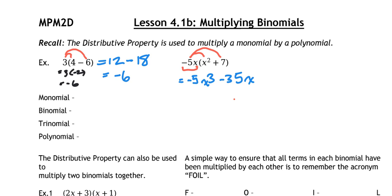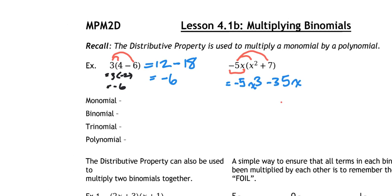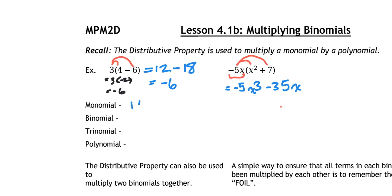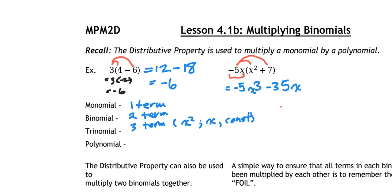Let's review vocabulary. A monomial means one unique term. A binomial has two unique terms. A trinomial has three unique terms — for example, x squared plus x plus a constant like one, two, or three. A polynomial is anything with four or more terms.